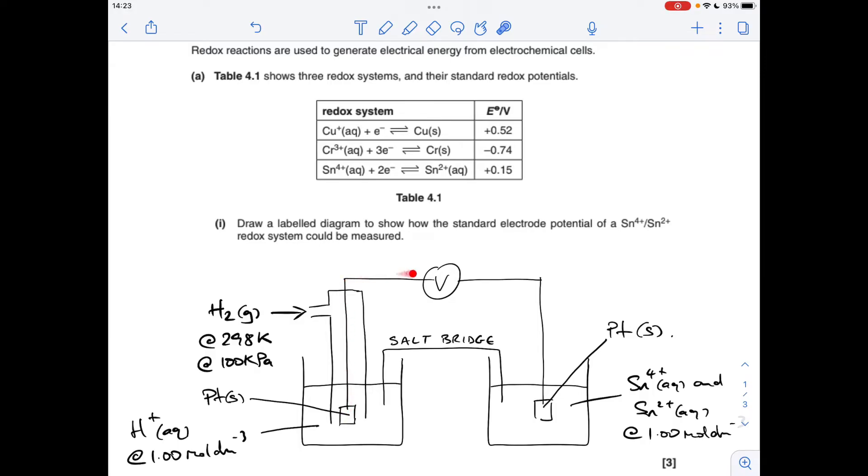You need an external wire with platinum electrodes dipping into each of your solutions, obviously with a voltmeter in the middle. So in the standard hydrogen electrode, we've got hydrogen gas going in at 298 Kelvin, 100 kilopascals of pressure, and the solution would be a one mole per decimeter cubed solution of H+ ions. The solution in the other one is a mixture of tin 4+ and tin 2+, both at one mole per decimeter cubed.